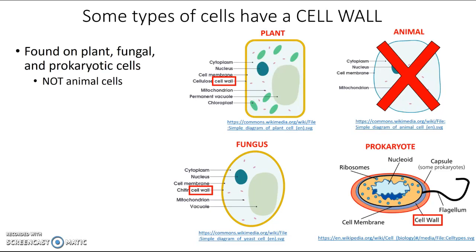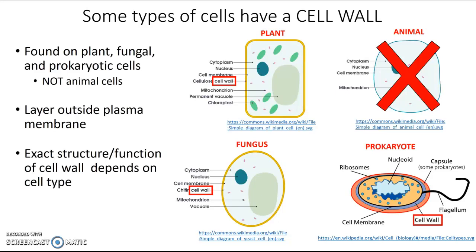If you look at where the cell wall is found in each of these diagrams, you'll see that it's always just outside or just external to the plasma membrane. We do find the cell wall in the same general position in each of these types of cells, but the exact structure and function of the cell wall is going to be a little bit different depending on what type of cell we find it in. We're going to take a quick look at the structure and function of the cell wall in each of these types of cells, starting with plants.